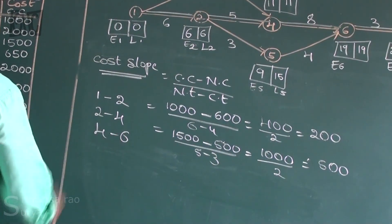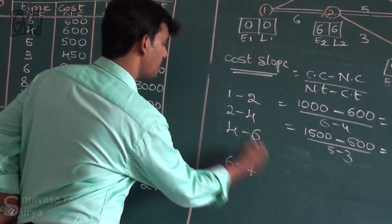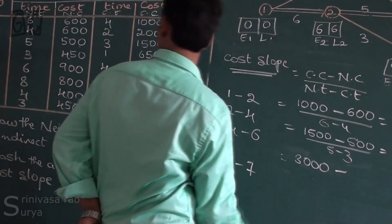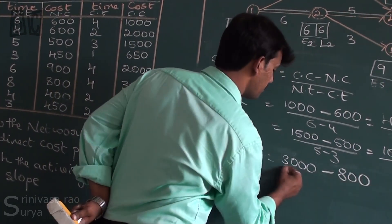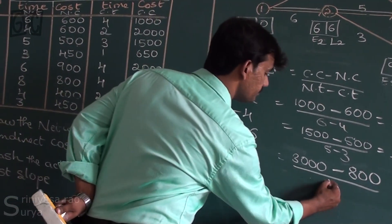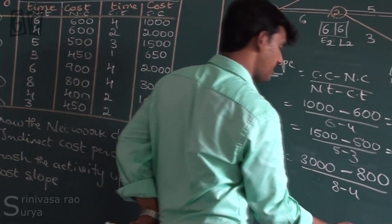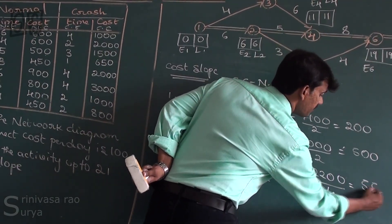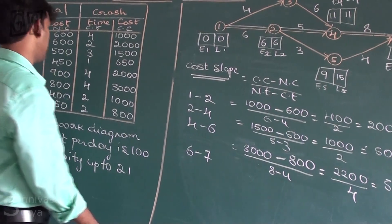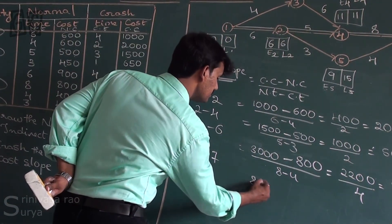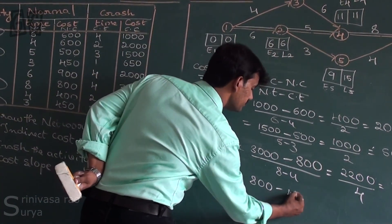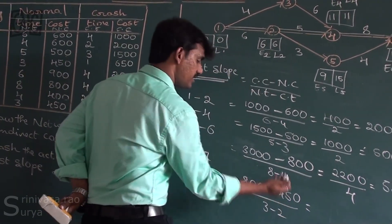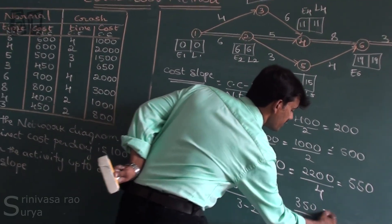For activity 4 to 6: cost slope = (3000 minus 800) divided by (8 minus 4) = 2200 divided by 4 = 550. For activity 6 to 7: cost slope = (800 minus 450) divided by (3 minus 2) = 350 divided by 1 = 350.